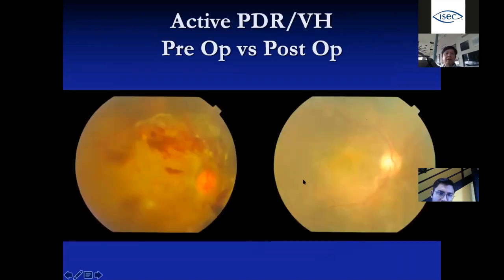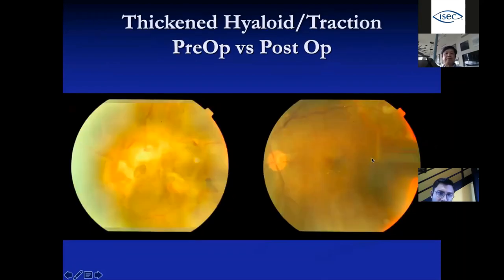Here is a case before and after operation — surgery can restore back the anatomy well. Another case shows significant distortion before surgery; timely surgery can restore vision significantly.